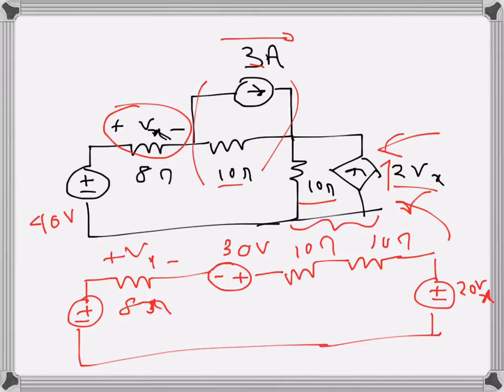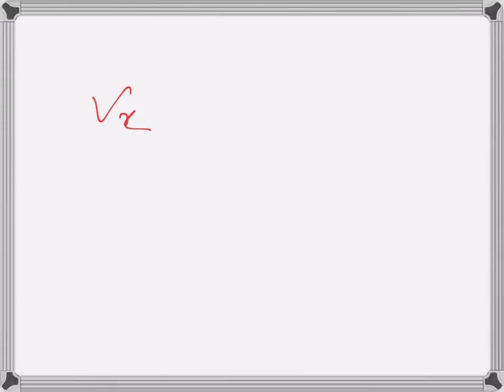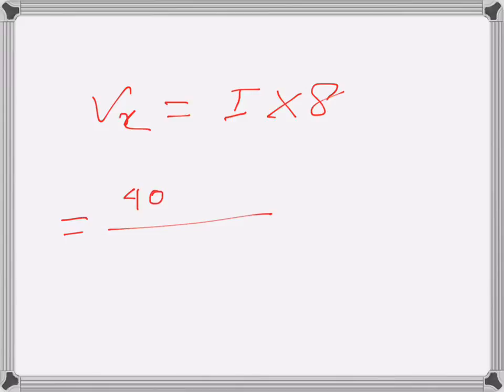This is the unknown Vx, and this is 40 volts. From here I can write the series current I that will flow through the circuit. I am interested in finding Vx — Vx will be the series current I times 8, which is the value of the resistance.